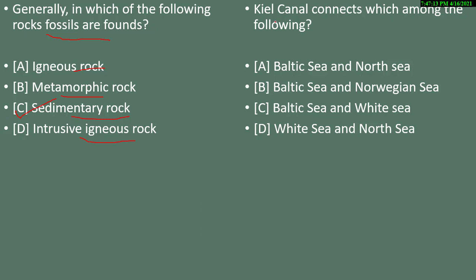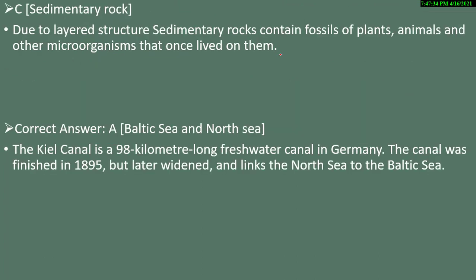Fourth question: the Kiel Canal connects which among the following? Options are Baltic Sea and North Sea, Baltic Sea and Norwegian Sea, Baltic Sea and White Sea, or White Sea and North Sea. The correct answer is Baltic Sea and North Sea.